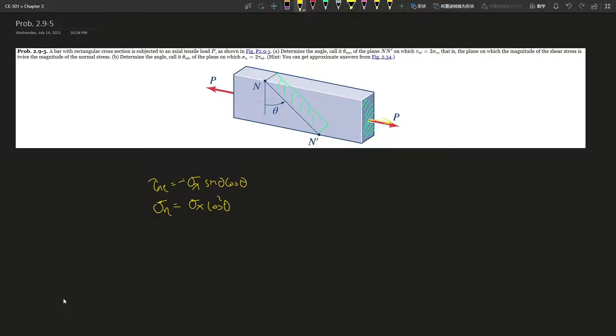All right, so for problem 2.9-5, a bar with rectangular cross-section is subjected to an axial tensile load P, as shown in the figure.